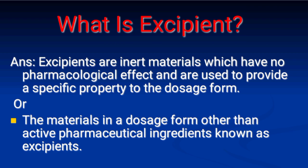Next: What is an excipient? Answer: Excipients are inert materials which have no pharmacological effect and are used to provide a specific property to the dosage form. In other words, any material in a dosage form other than the active pharmaceutical ingredient is known as an excipient.